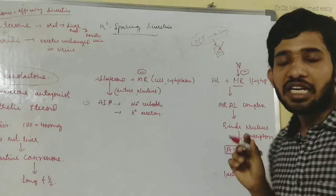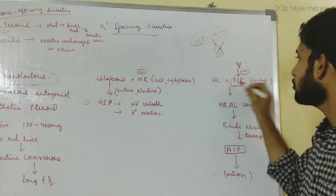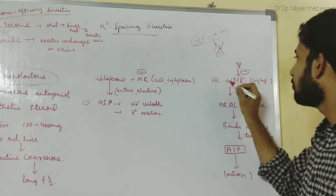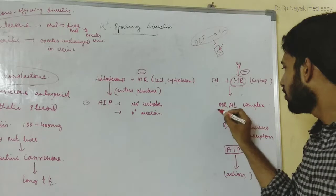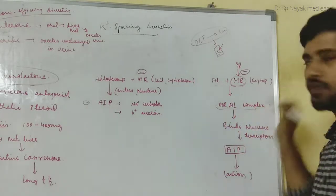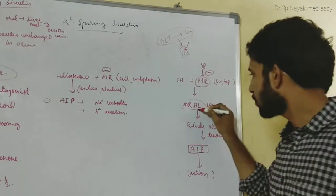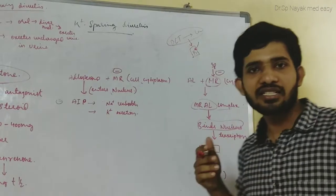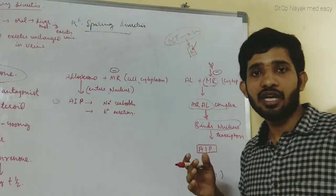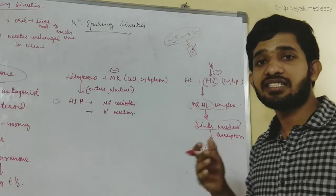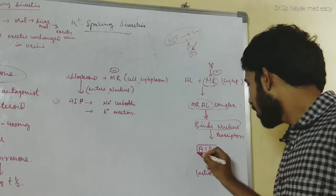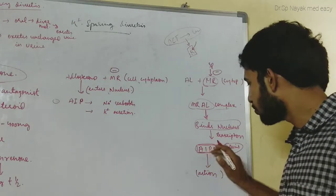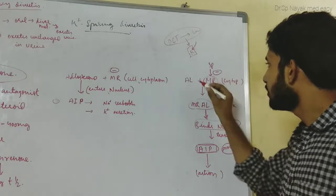In the cytoplasm, the aldosterone binds with the mineralocorticoid receptor, forming a mineralocorticoid receptor-aldosterone complex. This complex then enters into the nucleus, where it binds to DNA and undergoes transcription, forming mRNA. After mRNA, by translation, it synthesizes specific proteins — these are called aldosterone-induced proteins.